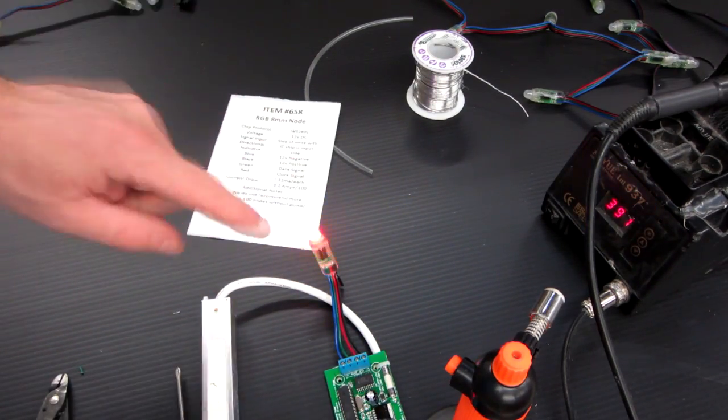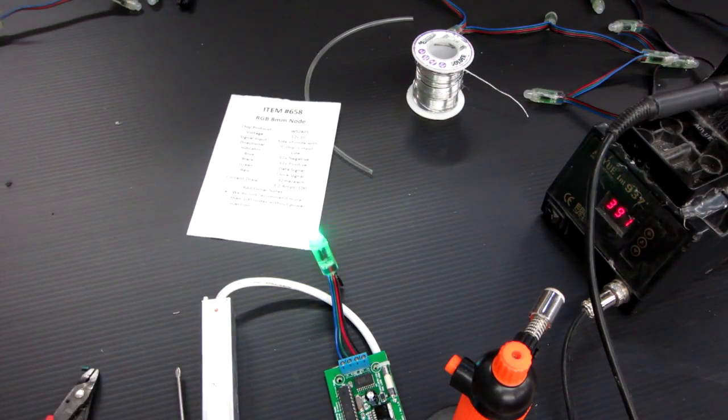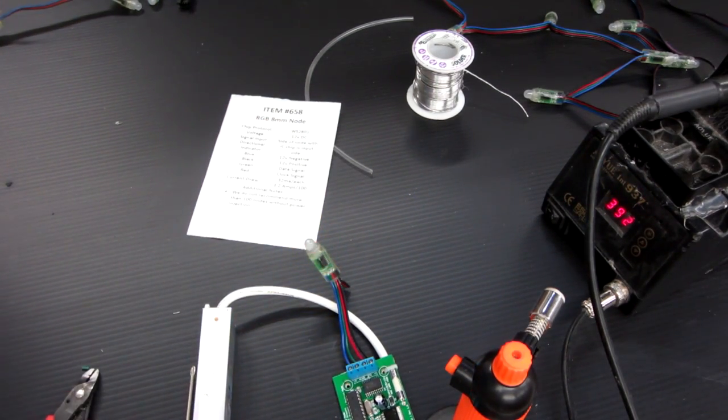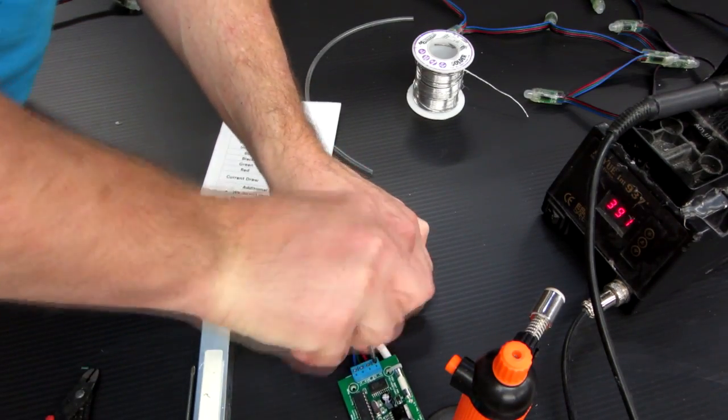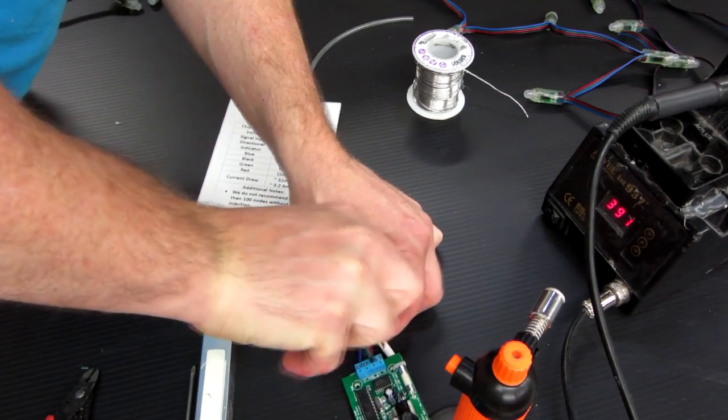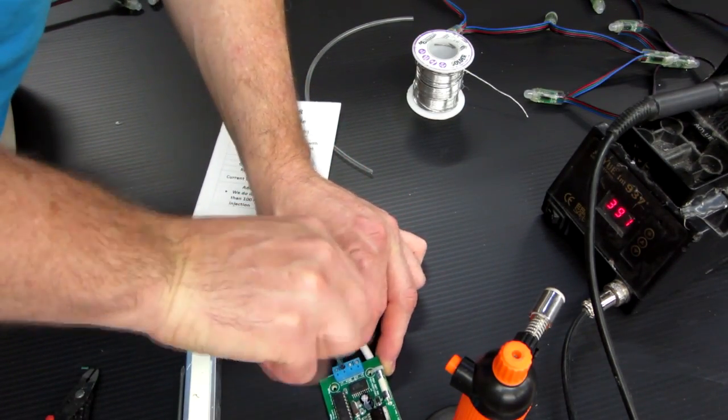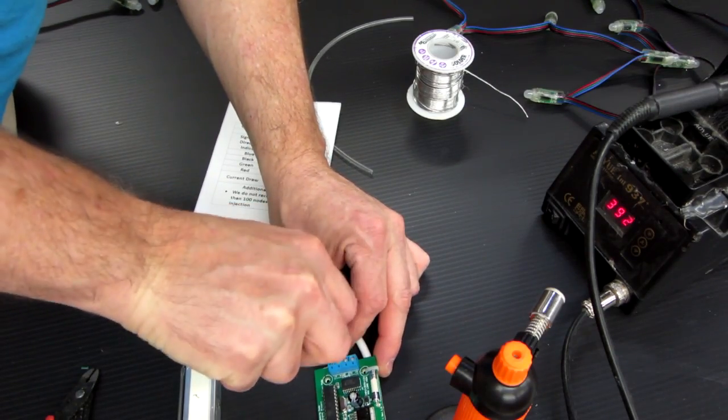That means that we have things correct. So what we're going to do, go ahead, unplug the controller, power supply, and I'm just going to unhook the wires here. And we're going to take a string, which we don't know if it works correctly or not, and we're going to hook it up.